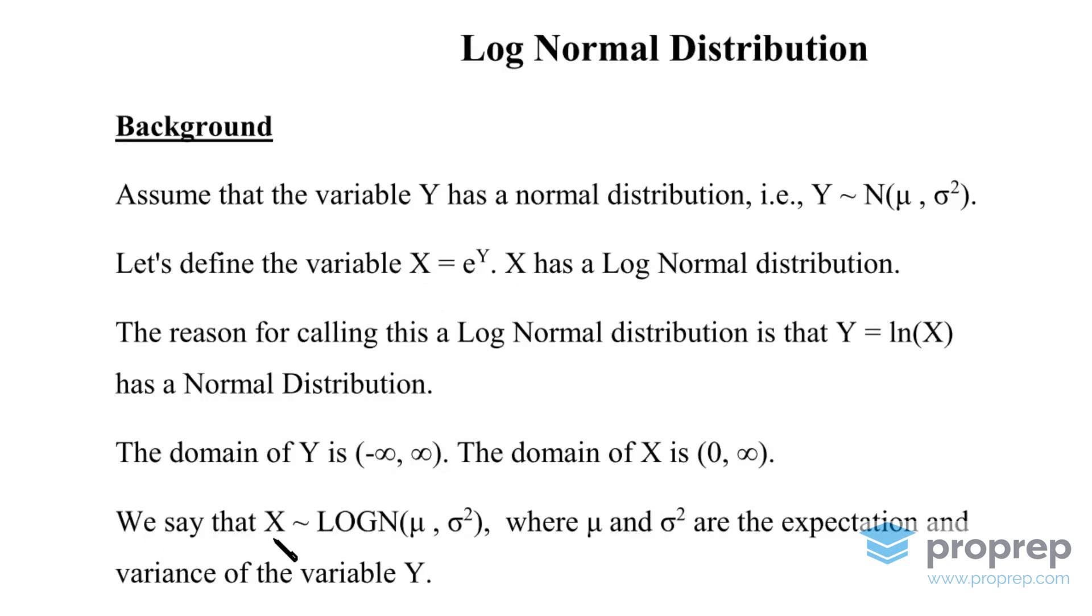So we say that X has a log normal distribution with parameters mu and sigma squared. Now, we have to be careful here because this mu and sigma squared are not actually parameters of X, but they're parameters of Y. Those are these parameters right here. So mu and sigma squared are the expectation and variance of the variable Y.